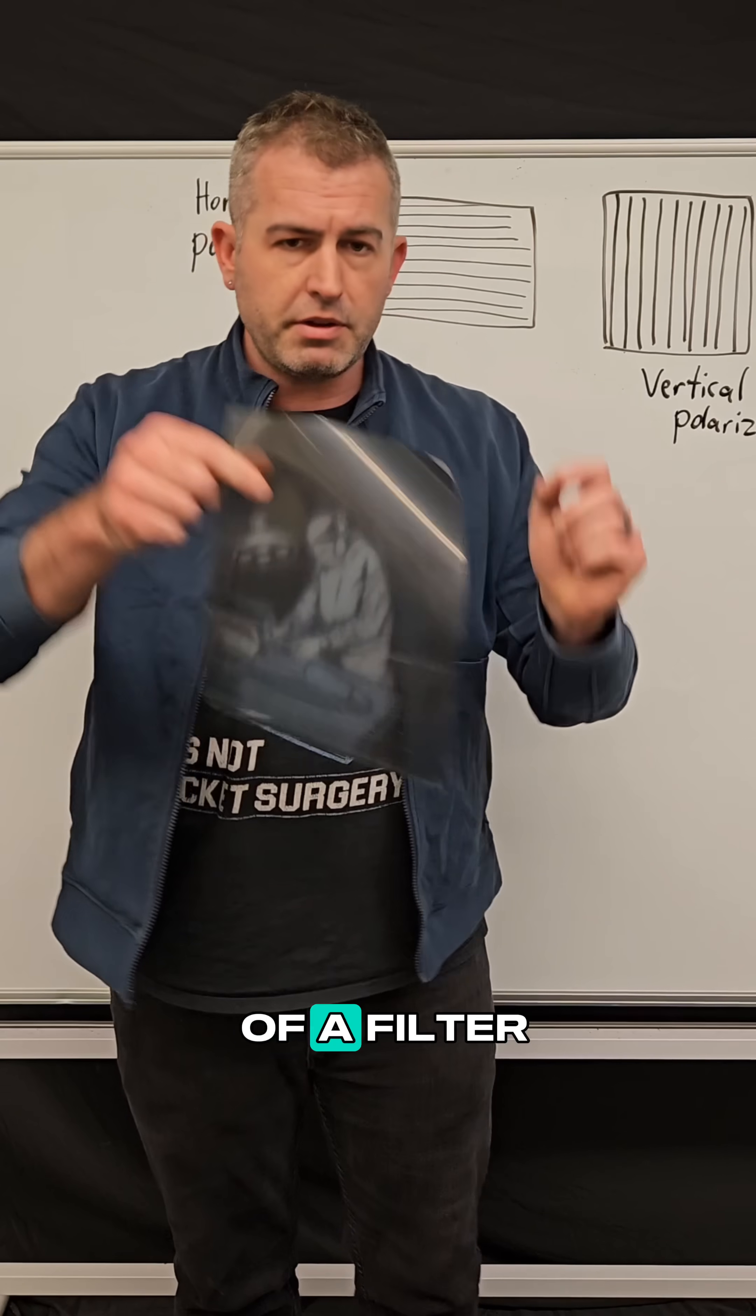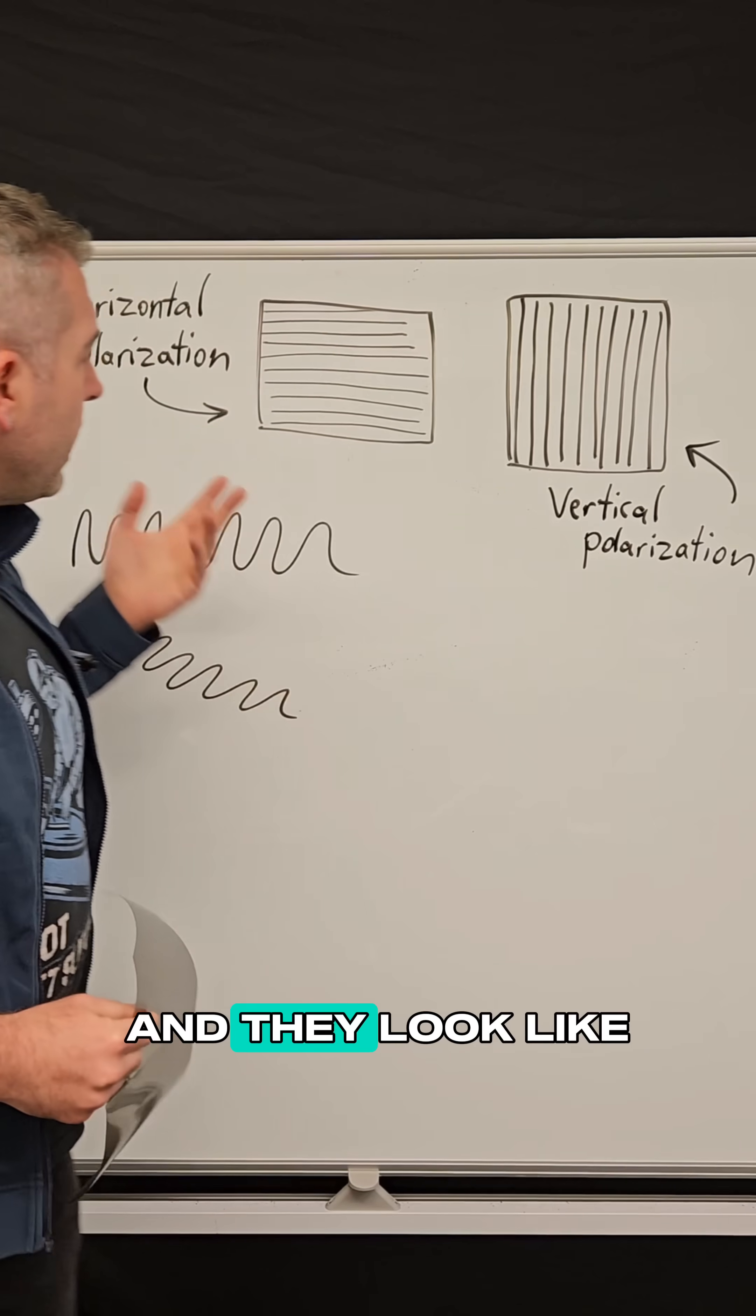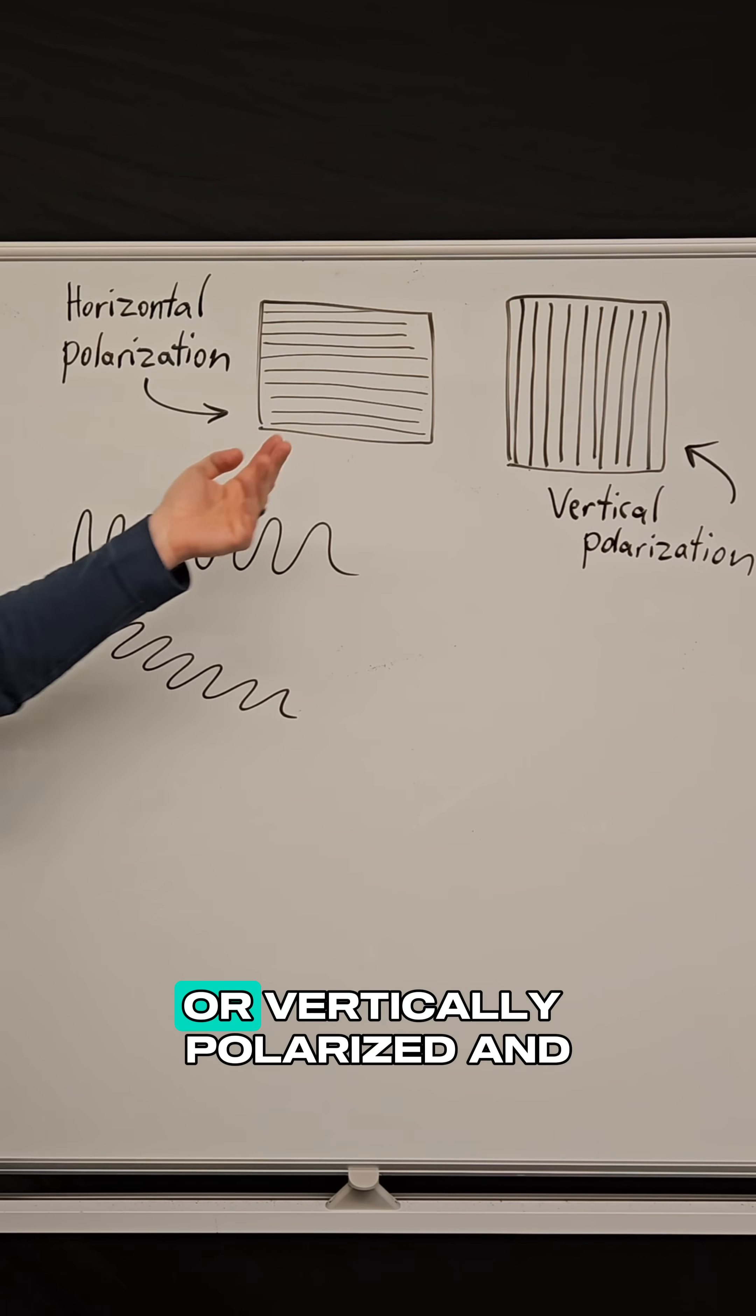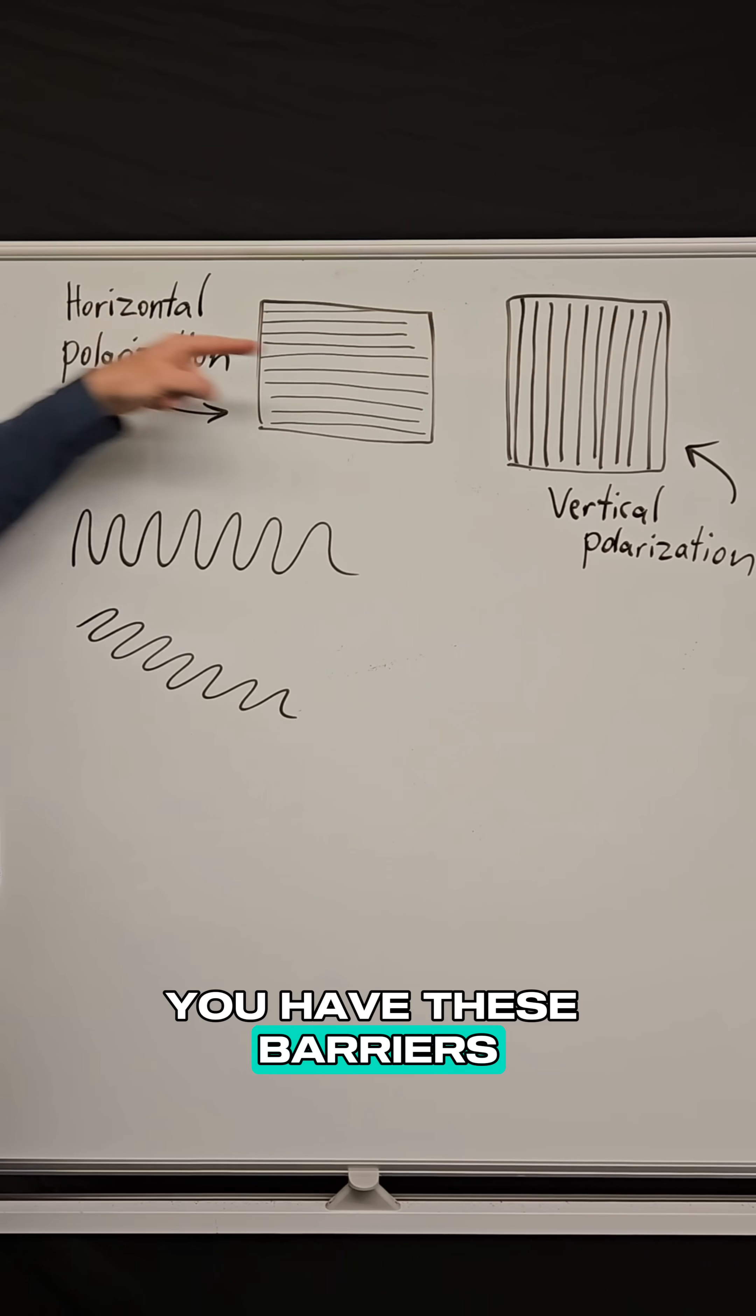So here's an example of a filter, and you might see this on your sunglasses lens. They look like this. They could be horizontally polarized or vertically polarized, and what that means is you have these barriers that are restricting light from getting through.